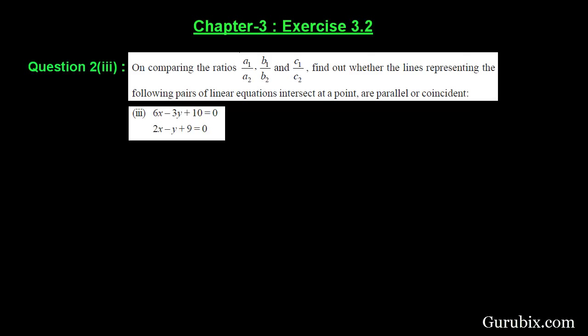Welcome friends, let us solve the third part of question number 2 of exercise 3.2 of chapter 3. The question says, on comparing the ratios a1 over a2, b1 over b2, and c1 over c2, find out whether the lines representing the following pair of linear equations intersect at a point, are parallel, or coincident.